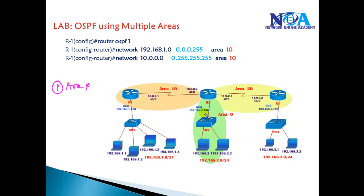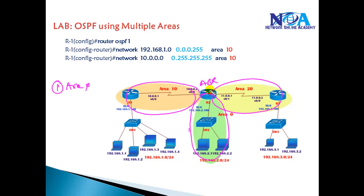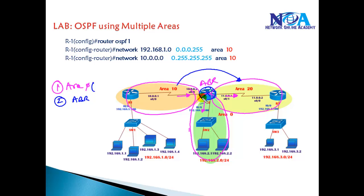Area zero should be the transit area. Here I'm using area zero which connects to area 10 as well as area 20. This is my area border router connecting area 10, area 20, and area 0. Area 0 is the transit area because traffic from area 10 to area 20 goes via area 0 — that's Router 2. There must be at least one area border router connecting multiple areas, and interfaces facing each other must be in the same area to establish a neighbor relationship.